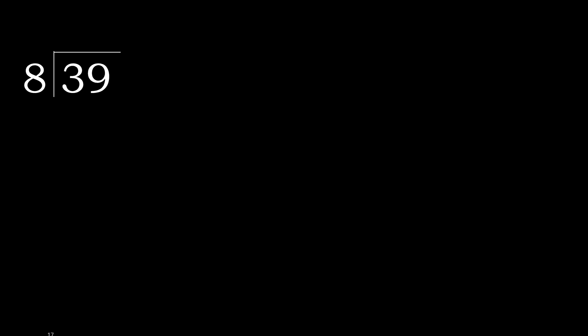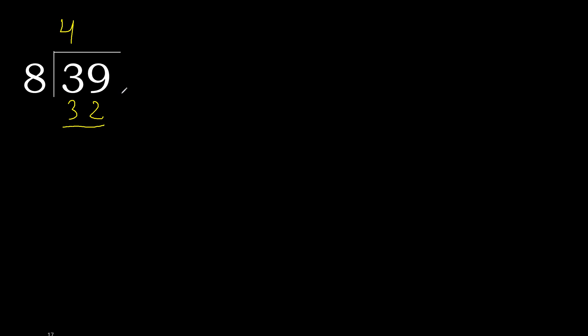39 divided by 8. 3 is less, therefore next. 39 is not less, therefore with 39: 8 multiplied by which number is nearest to 39 but not greater? 8 multiplied by 5 is greater. Multiplied by 4: 32 is not greater.